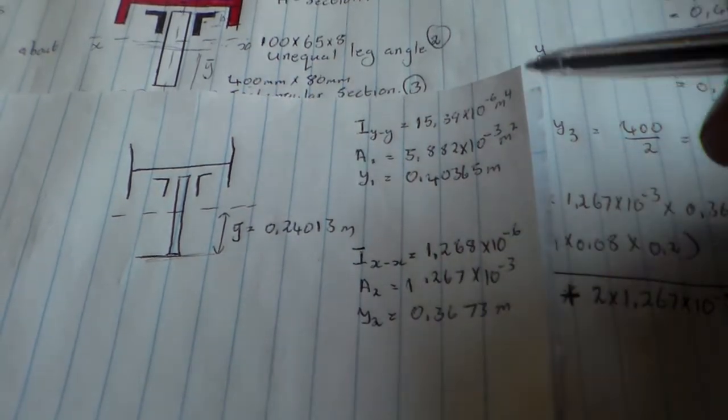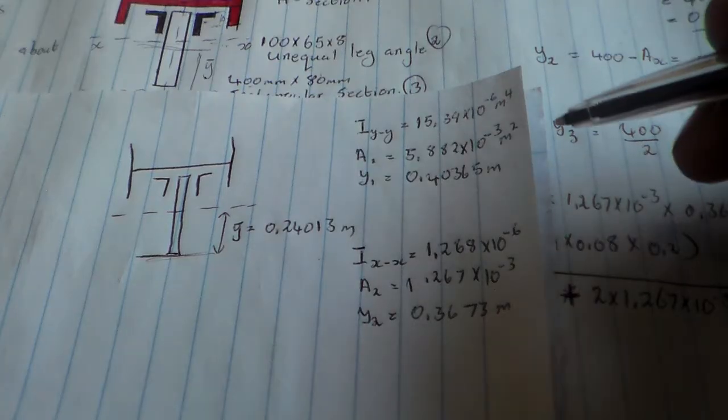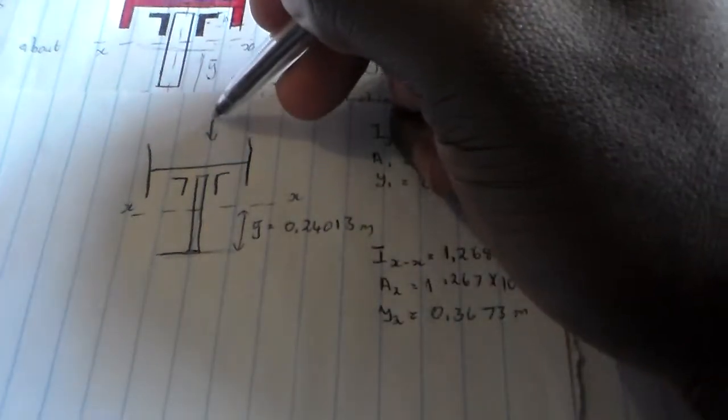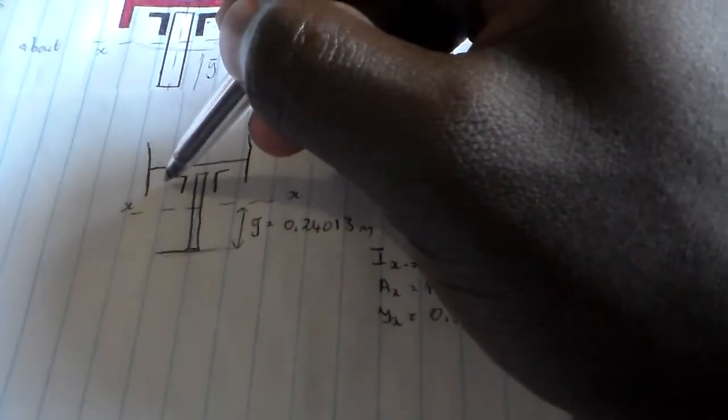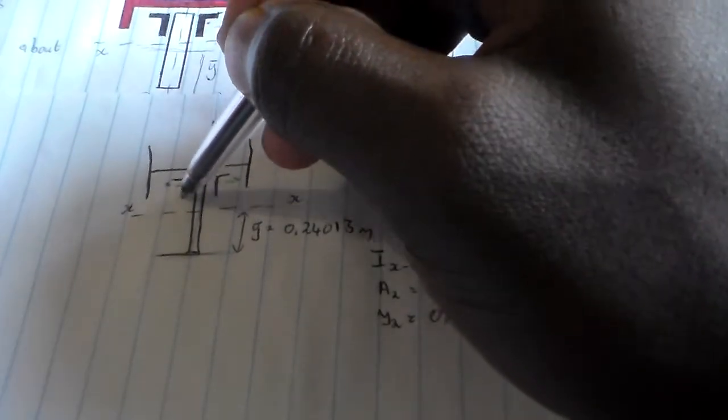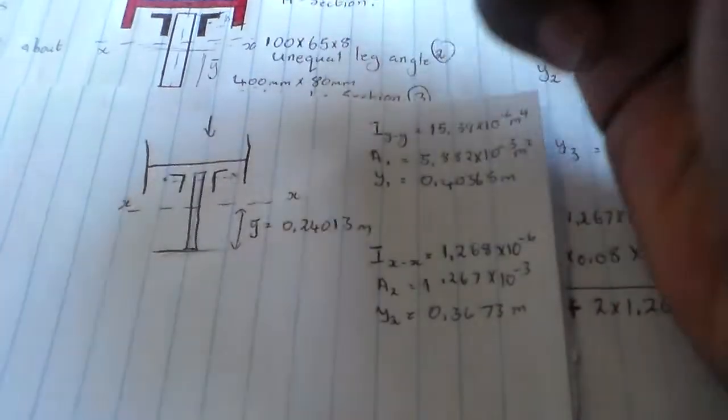Now if we want to calculate the moment of inertia, first of all we have to calculate the moment of inertia about the x-axis. If this is our x-axis, when we apply a force or weight on the beam, the beam will always bend about the x-axis. So we are concentrating on the x-axis when we cut the angle leg at the x-axis.